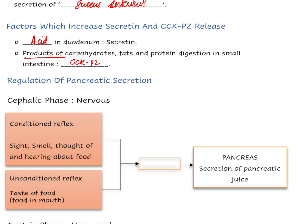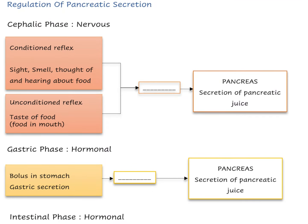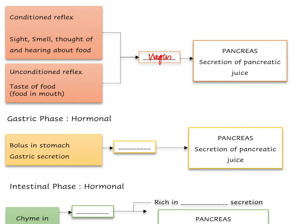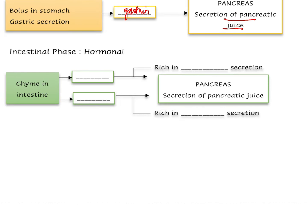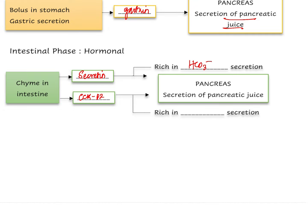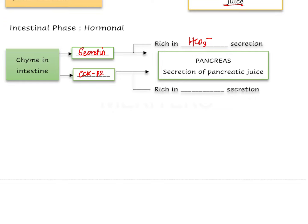Factors increasing secretin release include acid in the duodenum. Factors increasing cholecystokinin release include products of carbohydrate, fat, and protein digestion in the small intestine. In the regulation of pancreatic secretion: the cephalic phase is mainly nervous via conditioned and unconditioned reflexes; the gastric phase is mainly hormonal through gastrin; and the intestinal phase involves secretin — which increases bicarbonate-rich secretion — and cholecystokinin — which increases enzyme-rich secretion — to aid digestion.